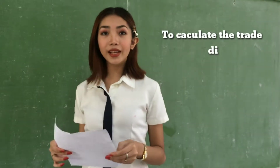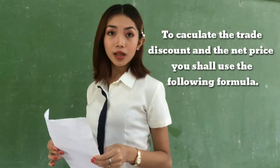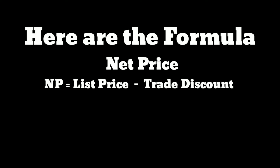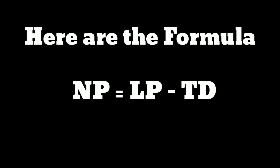To calculate the trade discount and the net price, we shall use the following formulas. Trade discount is equal to the list price multiplied by the trade discount rate: TD = LP × R. And for the net price, the net price is equal to the list price minus the trade discount: NP = LP − TD.